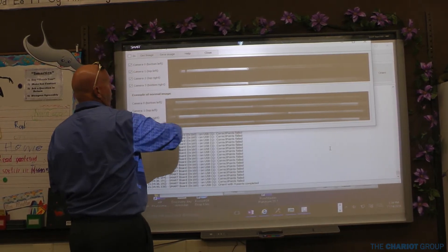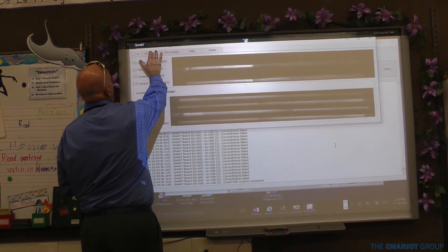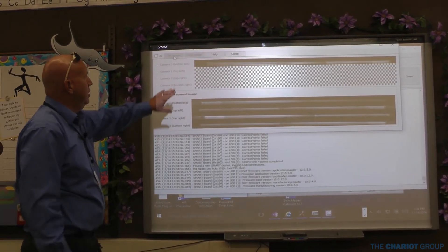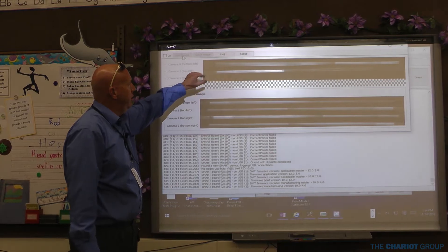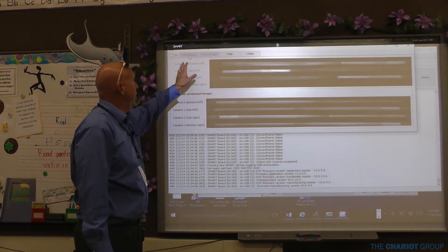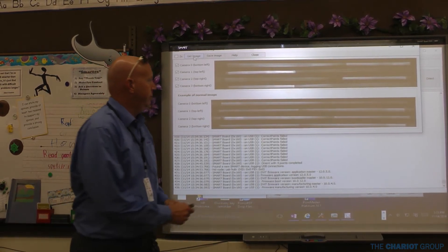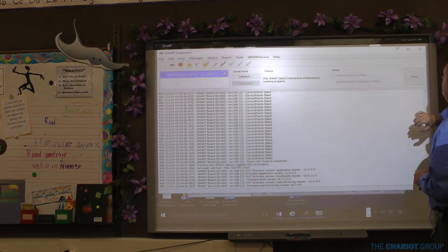So we're going to go up here again. We've got this Smart Board Diagnostics. We're going to click get image, just so you can see what it's supposed to look like. So you can see we've got camera zero, one, two, and three are all functional. So we'll close that out.